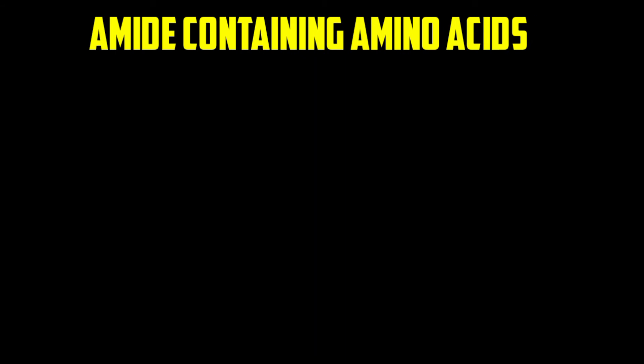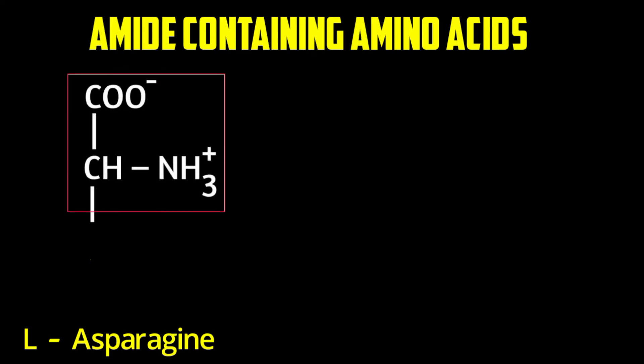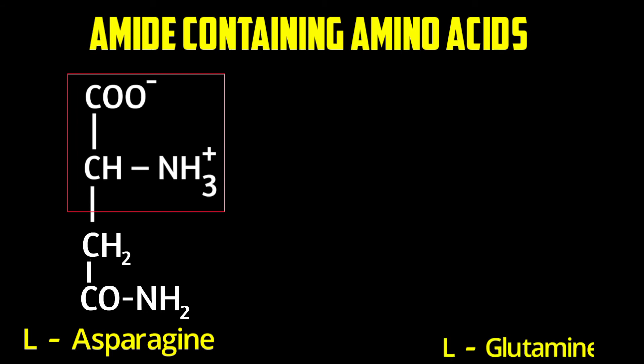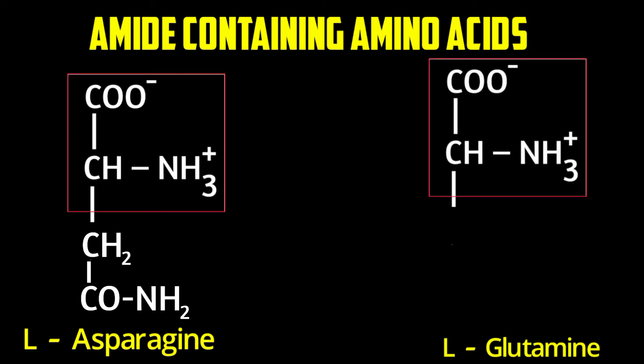Amide-containing amino acids are asparagine and glutamine. For asparagine, draw the general amino formula, add one carbon, then add the amide group CO-NH2. For glutamine, draw the general amino formula, add two carbons, balance the two carbons, then add the amide functional group CO-NH2.